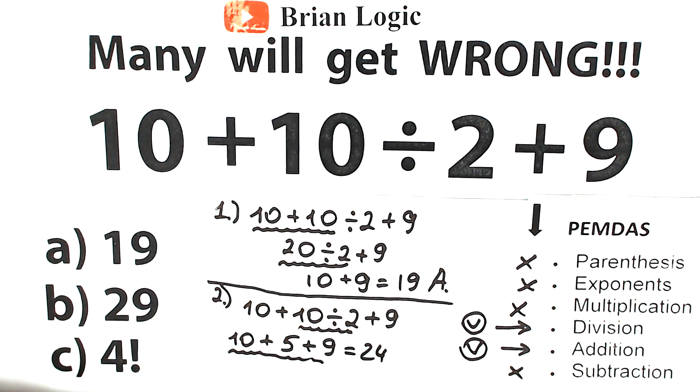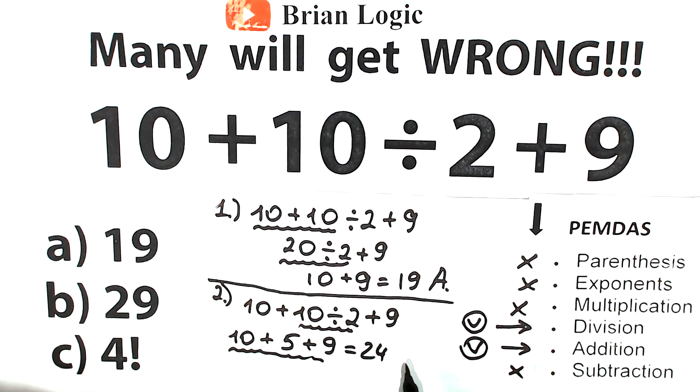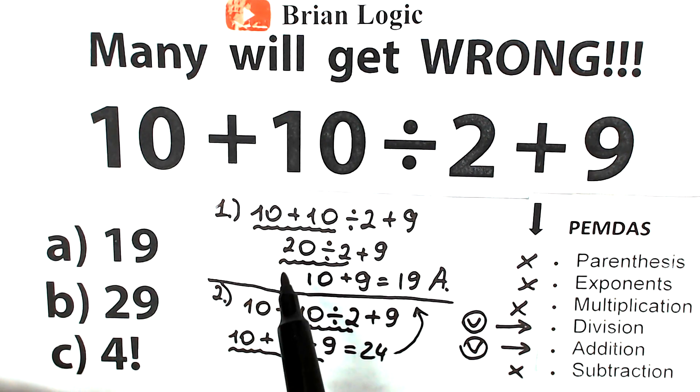But one really important moment: we don't have 24 as an option here. A lot of students go back to answer 19. They say that 19 is the correct answer, but I'm going to tell you that 19 is the wrong solution because we solved it in the wrong order.